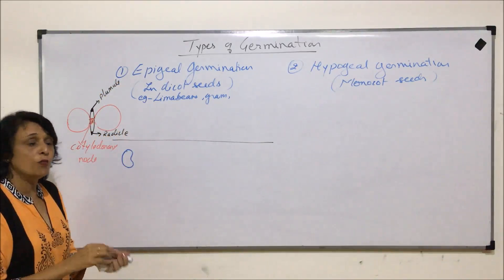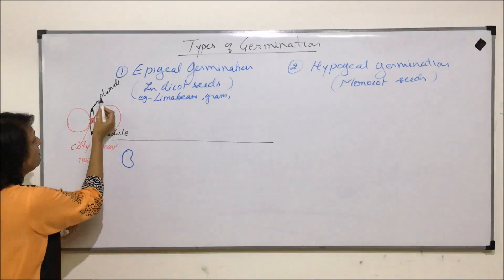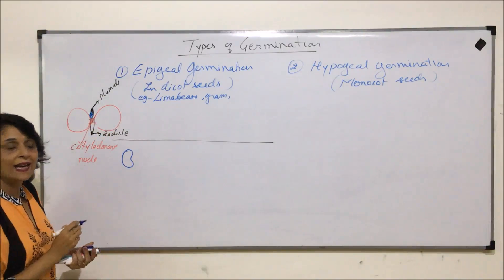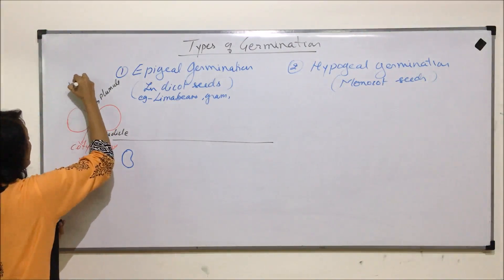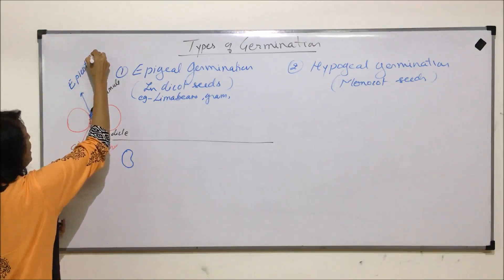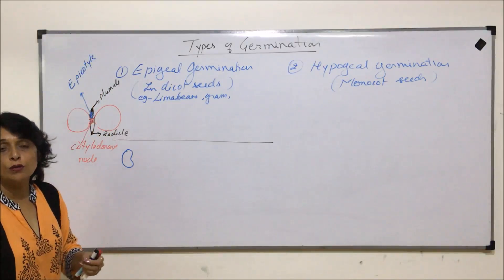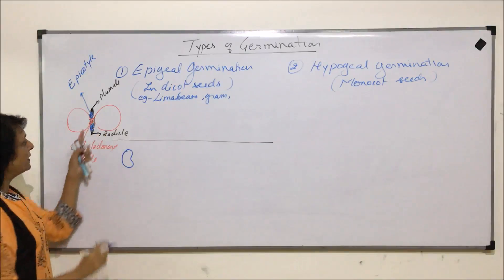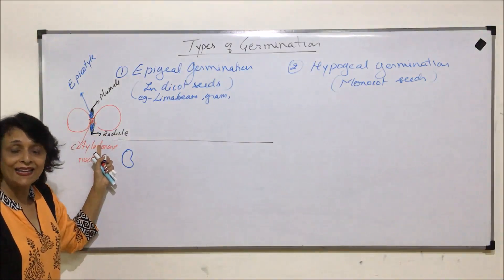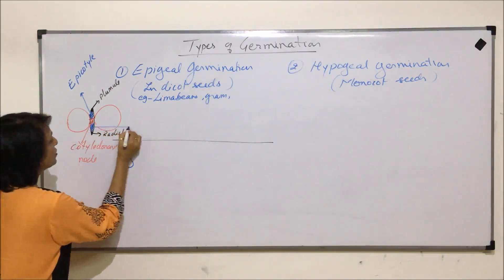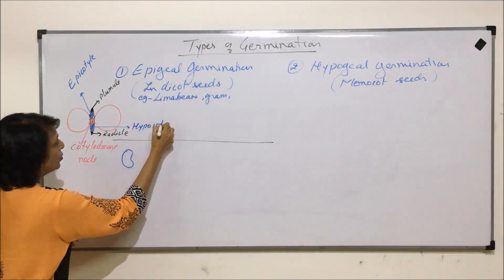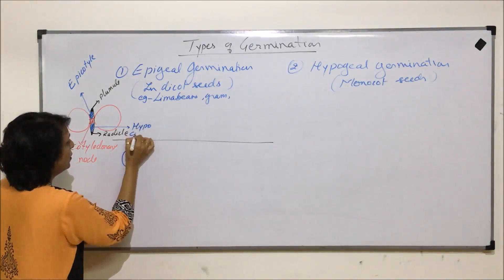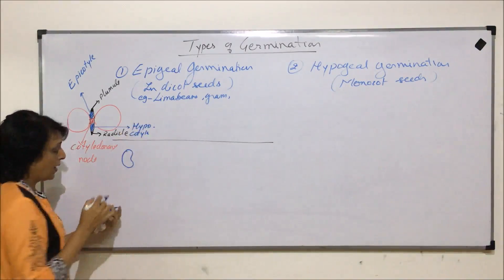Now there are two parts remaining. The part which is between the plumule and the cotyledonary node — that means this upper highlighted part — is known as epicotyl, or sometimes it is also pronounced as epicotyl. Similarly, there is one part which is between the cotyledonary node and the radicle. This part is known as hypocotyl, or hypocotyl.